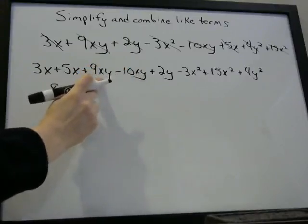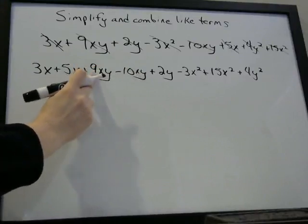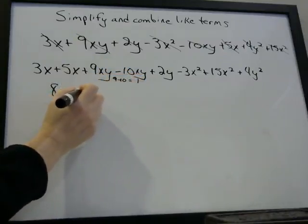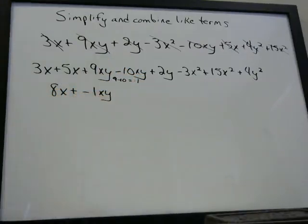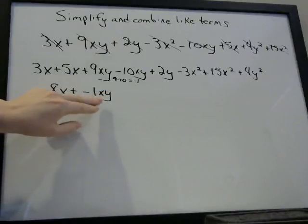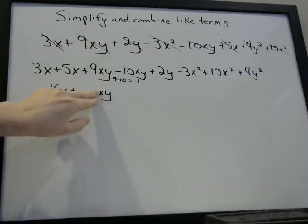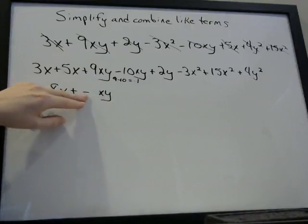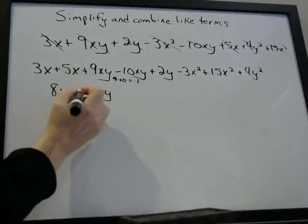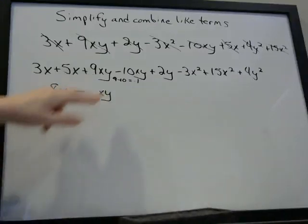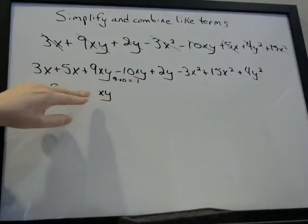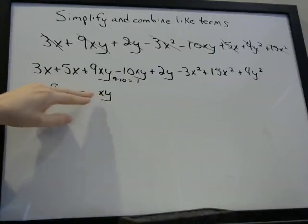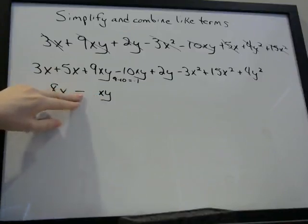Even though there are two variables, it's still the same philosophy — we can only combine terms that are the same. So here we have 9 minus 10, which is negative 1. So this is really minus 1xy. When we have a 1 in front of a variable, we generally don't write it, so this would be written as minus xy. We also generally don't write 'plus negative xy' — we just write 8x minus xy.